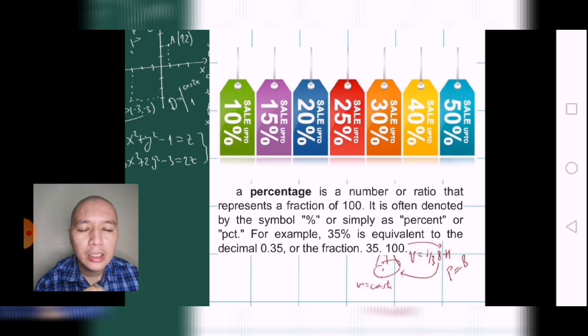Last but not the least, we have percentages. A percentage is a number or ratio that represents a fraction of 100. It is often denoted by the symbol percent, or simply as percent or PCT. For example, 35% is equivalent to the decimal 0.35, or the fraction 35 over 100. Similarly to our earlier example where we have shown a half cup expressed in decimals, fractions, or percentages.